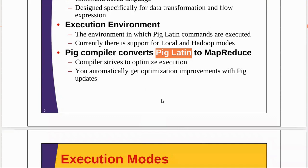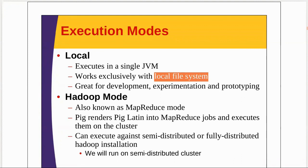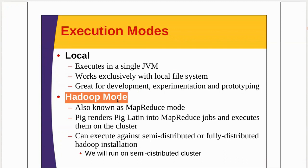Looking at the execution modes: local mode means in a single node, in a single JVM, it processes your data sets using only the local file system. In MapReduce mode, the PIG query you write is converted into a series of MapReduce jobs, which are executed in the Hadoop clusters. The second mode — Hadoop/MapReduce mode — is preferable for executing large data sets.